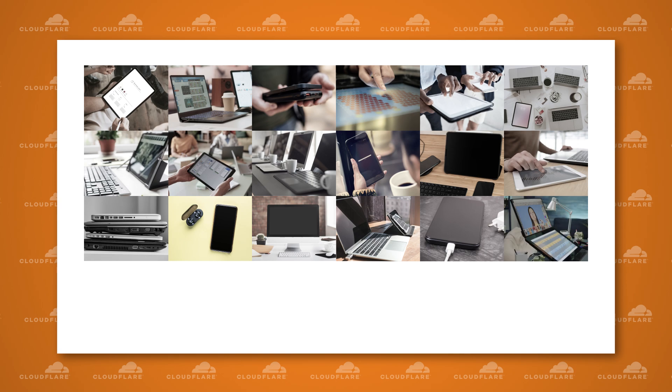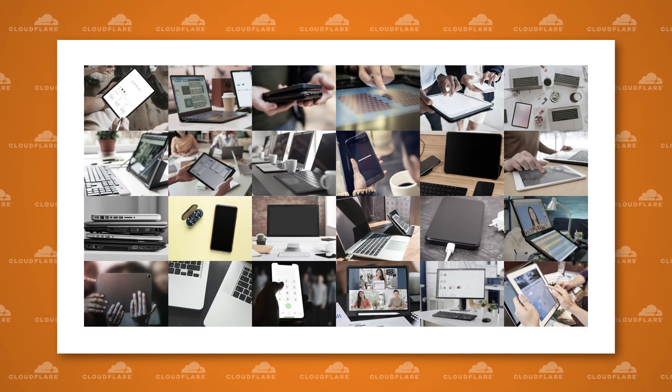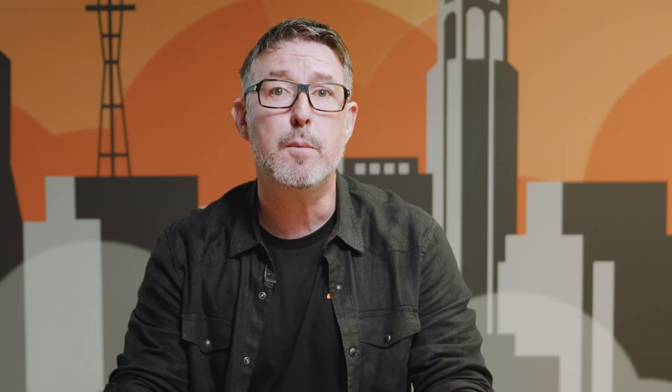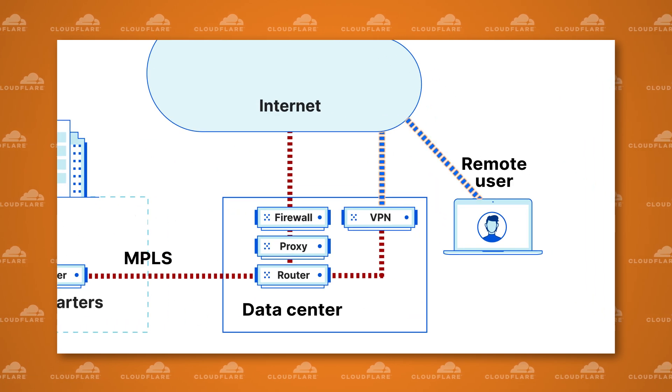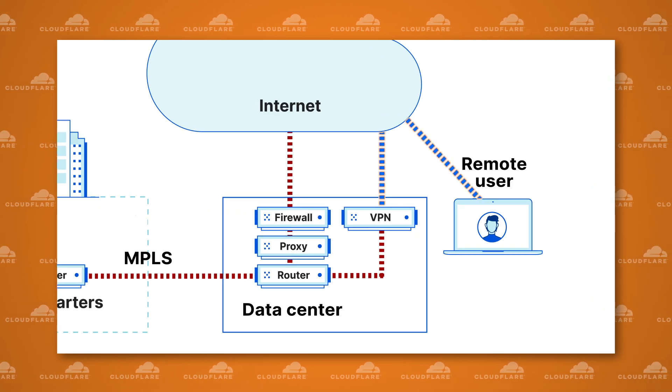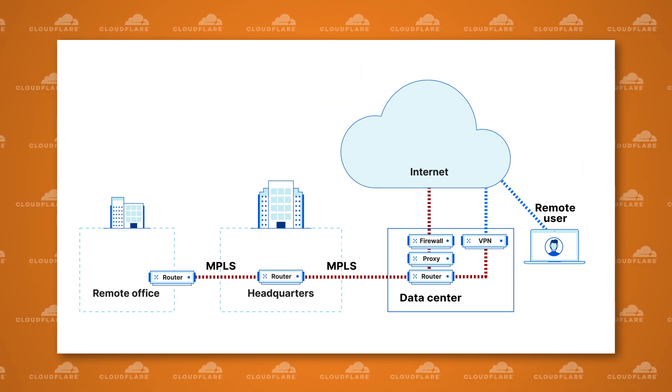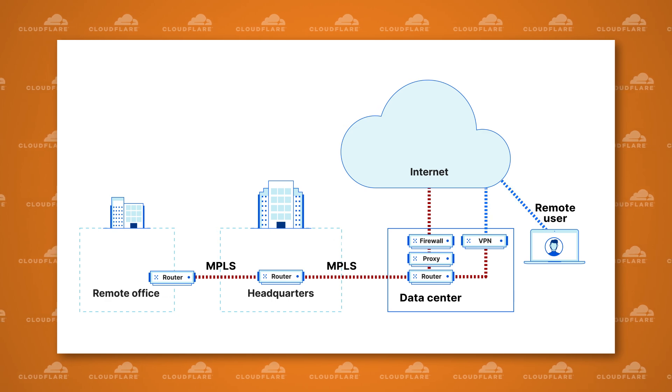While all this was going on, the proliferation of devices such as laptops and smartphones were allowing employees to work from anywhere, so VPNs were added into the mix, where people could dial up to the VPN and access their company network. Often all their internet access was also funneled through these VPN connections, so the same security policies office users had would also be applied to the remote user traffic, and it all came back through that company data center.